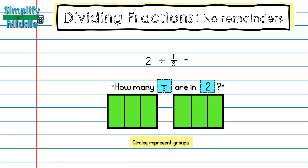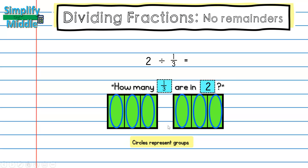I'm going to use circles to represent my groups here. I need to make sure that my whole is cut into the number that's in the denominator of my divisor. Then I'm looking for groups that match my numerator. Since this is a one, each one of these sections is going to be a group. So I'm just going to use a circle to represent that. You can see that I have a total of six groups. So the question — how many one-thirds are in two? — there are six groups of one-third inside two.